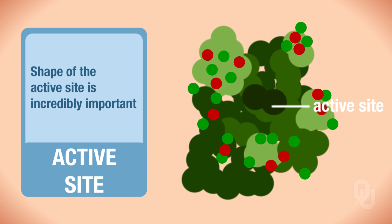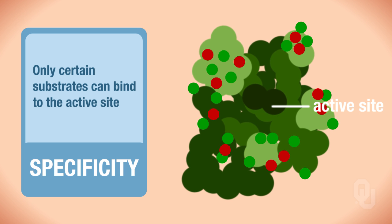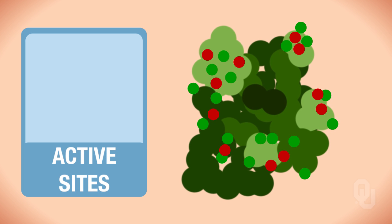Enzymes illustrate a concept called specificity. Only certain substrates can bind to that active site. The shape of that active site is due to those R groups, and how those R groups fold based on their chemical reactivity. So enzymes have active sites, and at the active site is where the substrate will bind. And they also have regulatory sites that I discussed a few moments ago.